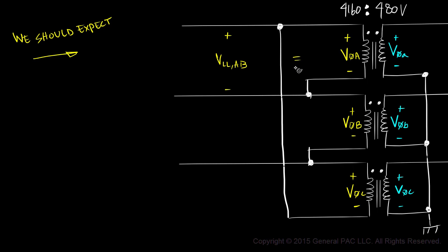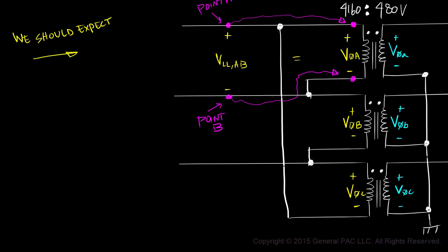Now, it's very important to visually verify this relationship to get an intuitive understanding. Suppose we label point A and point B as the points of measurement. Point A is the same point on the line as the polarity side of winding A, and point B is the same point on the line as the non-polarity side of winding A. So if we measured across point A and point B, we're actually measuring across the polarity side and the non-polarity side of winding A, which we earlier defined as our phase A voltage.